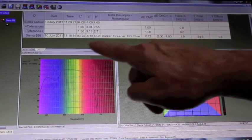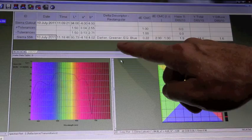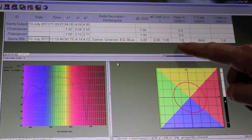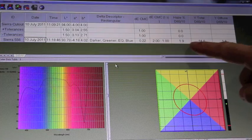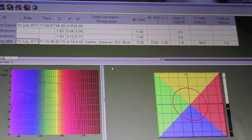And we've got our LAB values, a description of the product against its standard, and the haze calculation, which here is showing 1.9% haze, with its two components of the total transmission and the diffuse transmission.